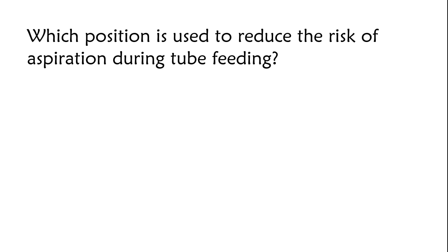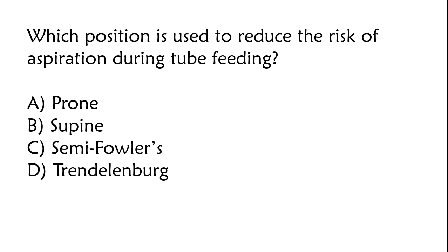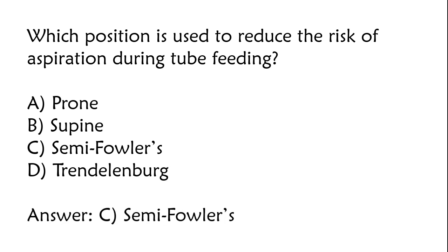Which position is used to reduce the risk of aspiration during tube feeding? Prone, supine, semi-Fowler's, Trendelenburg. The correct answer is Option C: semi-Fowler's.